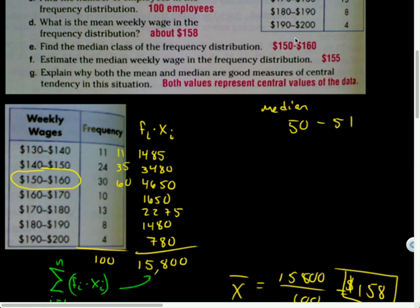So it was somewhere in there, so that's what the median salary, weekly salary, for all we know, would have been somewhere in there. And let's see, and then it says estimate the median weekly range in the frequency distribution. So I guess, yeah, that's what they end up just taking the average there, it's 155, right?